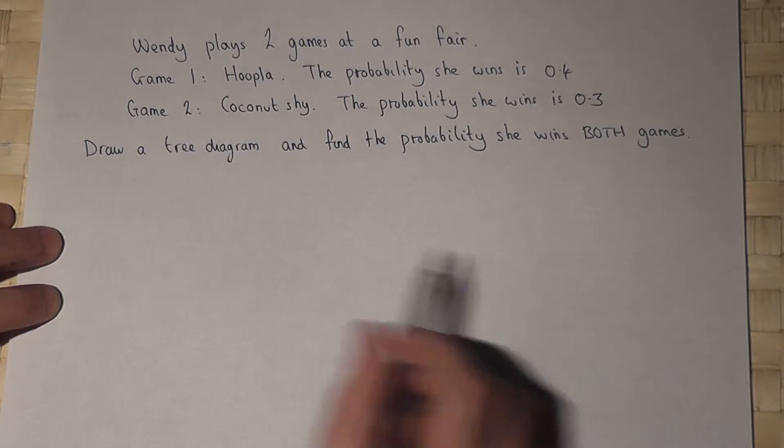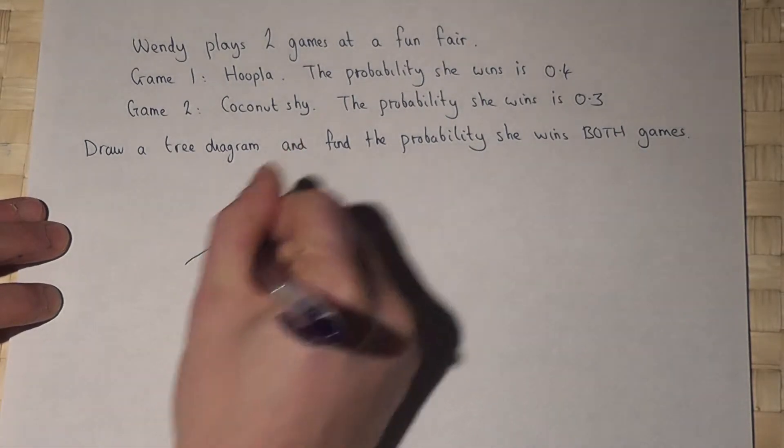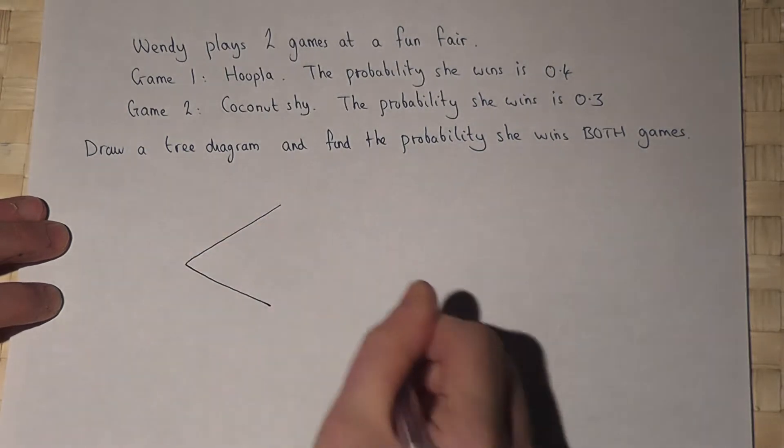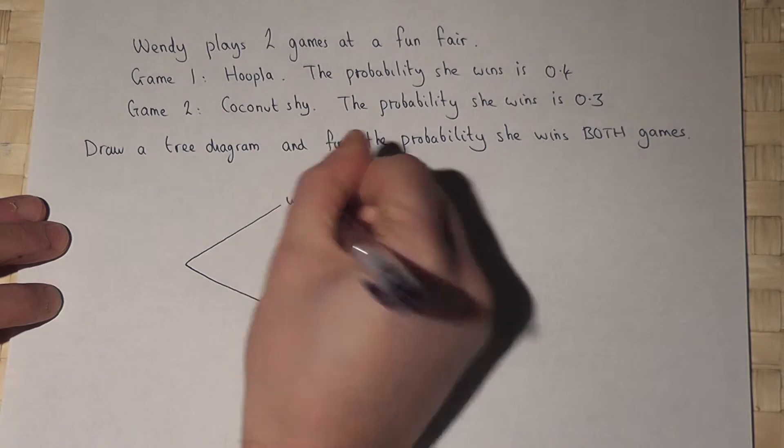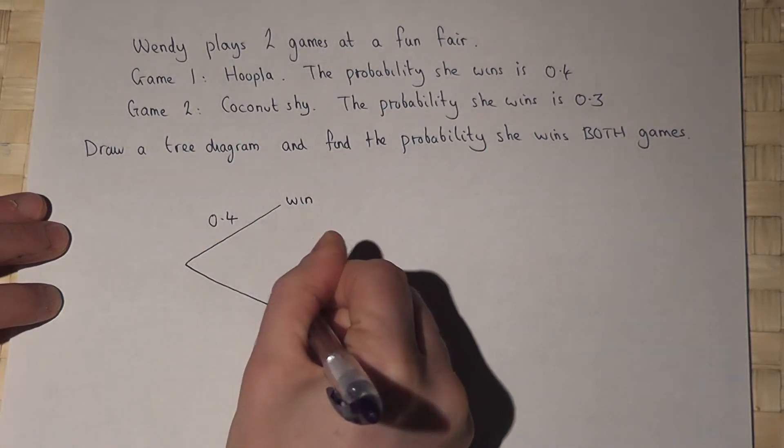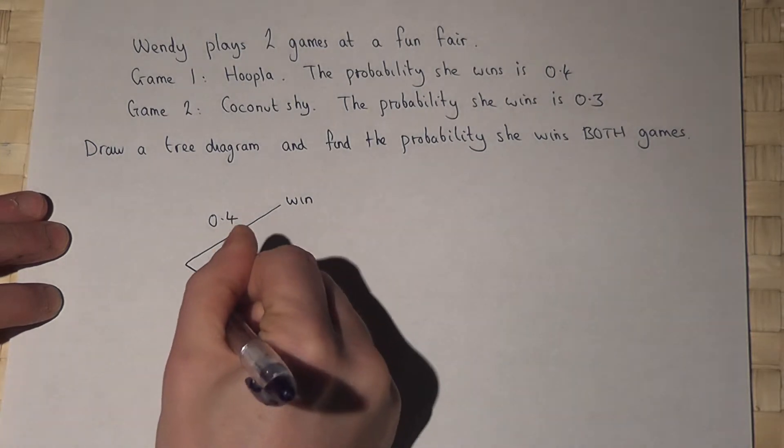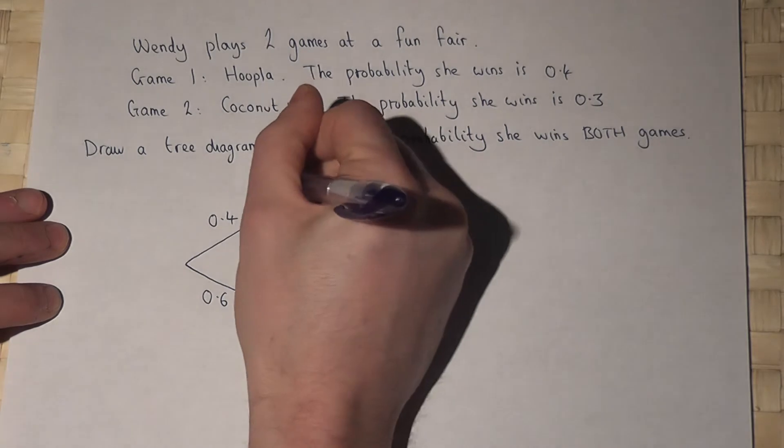I can draw a tree diagram to represent this. The first two branches represent the hoopla game. She will win with a chance of 0.4. She will therefore lose with a chance of 0.6. So that's the hoopla game.